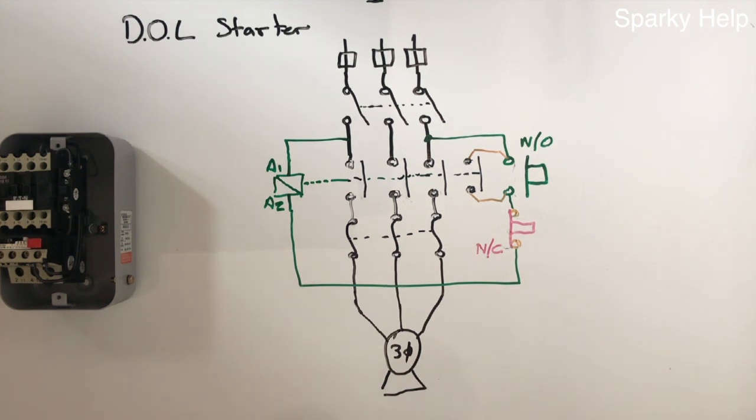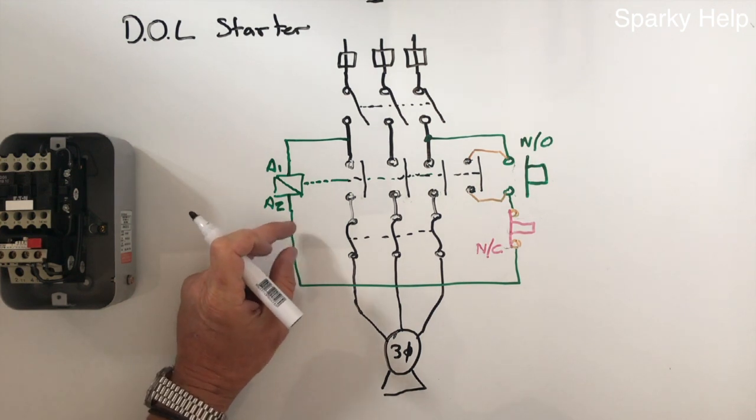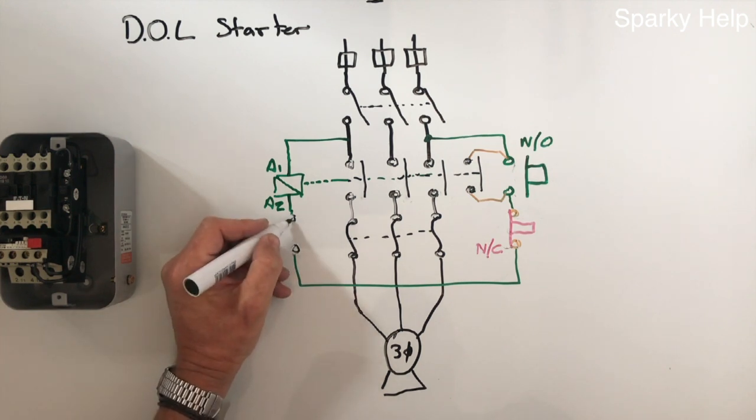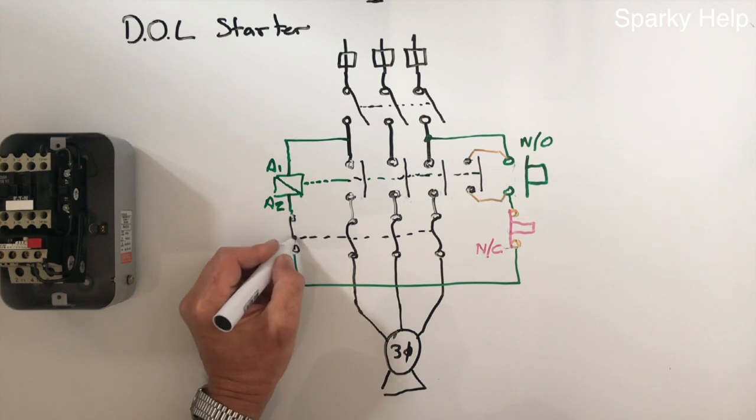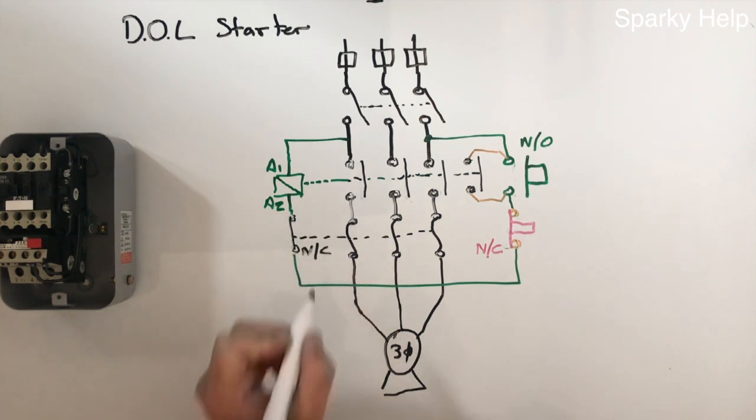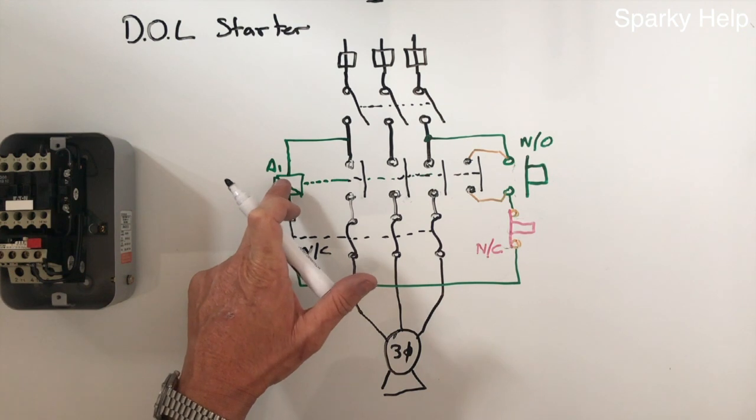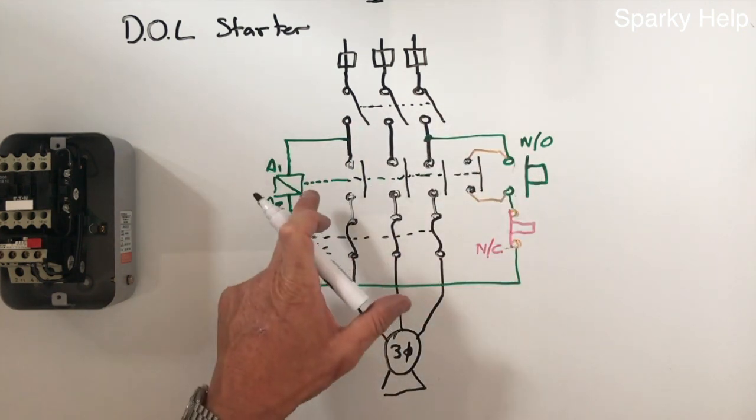So how does the overload work? Well the overloads are these things here. The overloads are bimetallic strips and when you pass current through a bimetallic strip, which are two dissimilar metals stuck together, one will expand more than the other. So when you pass current through them will warm them, depending on how they have been made, they will bend. And when they bend they will operate a switch. So the switch for that is internal within it, but it was fixed. It's basically here. And this is also a normally closed switch, so when the overloads overheat, they open this contact here again, breaking the contact, breaking the circuit around the start circuit and these contacts open.